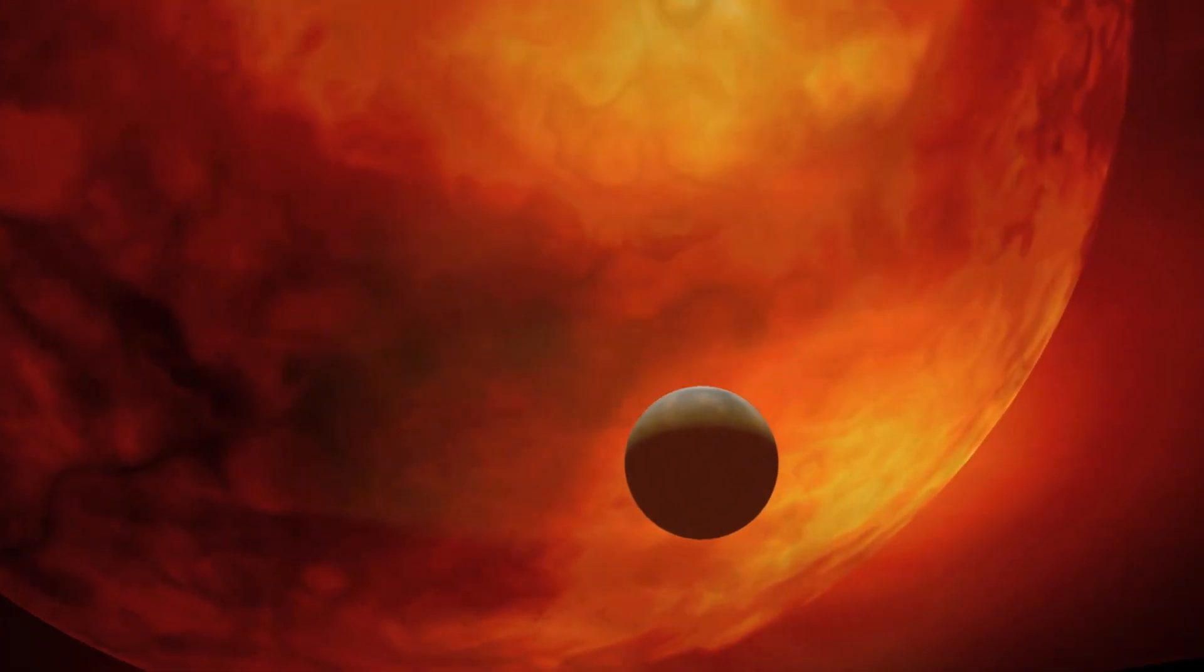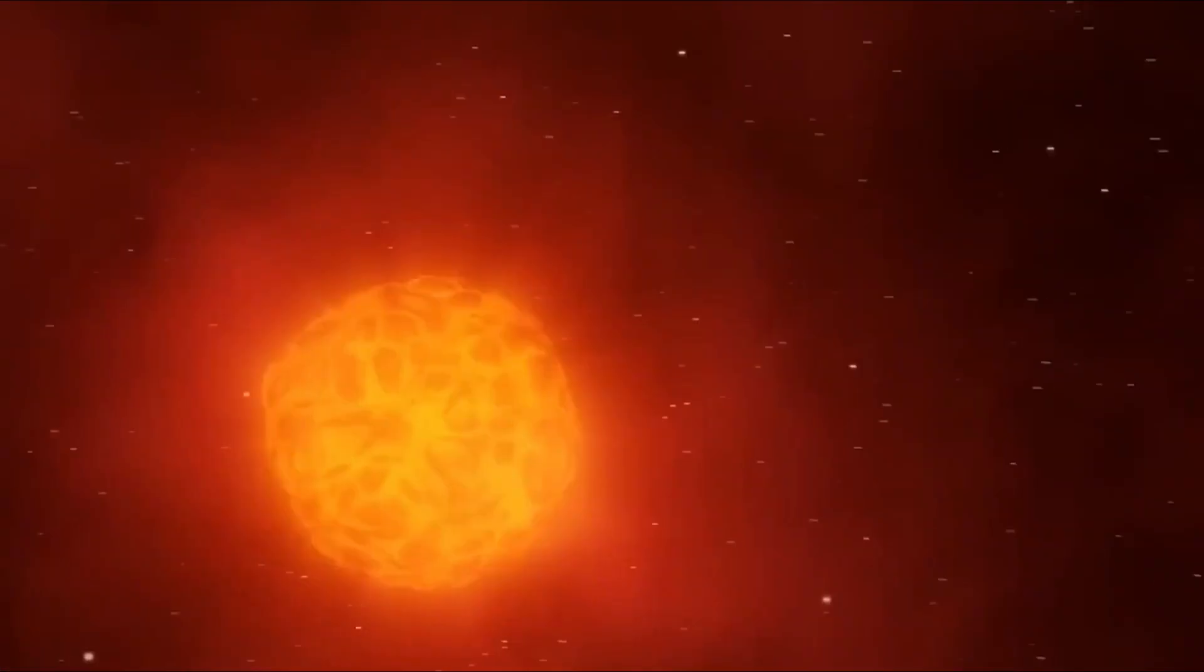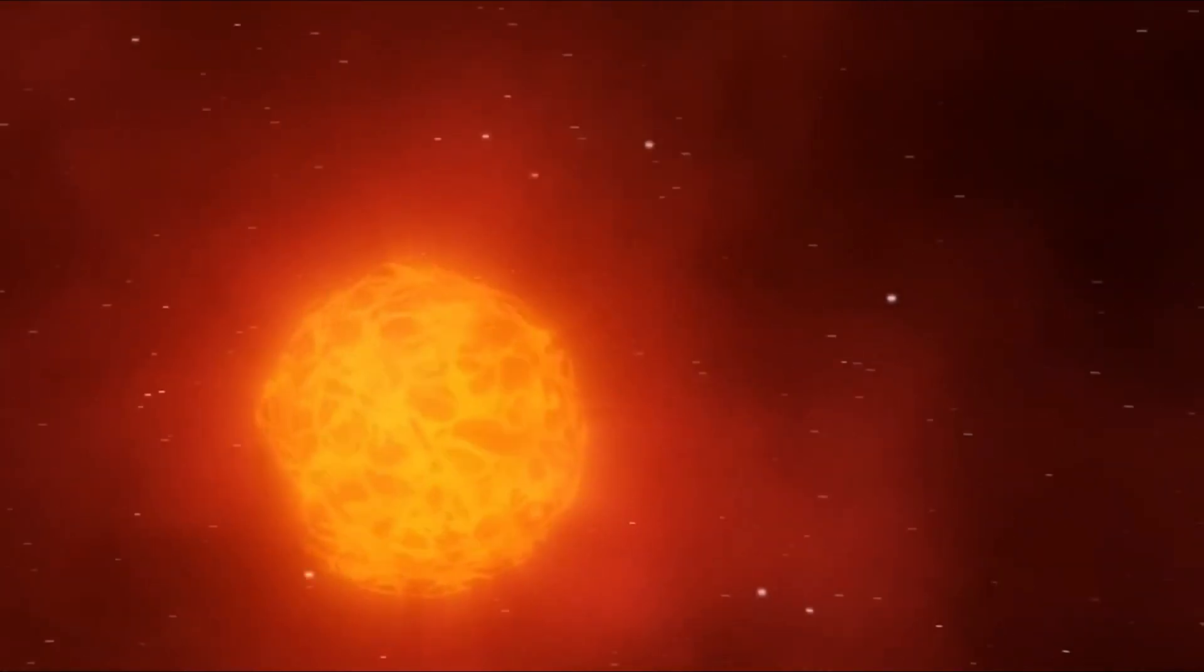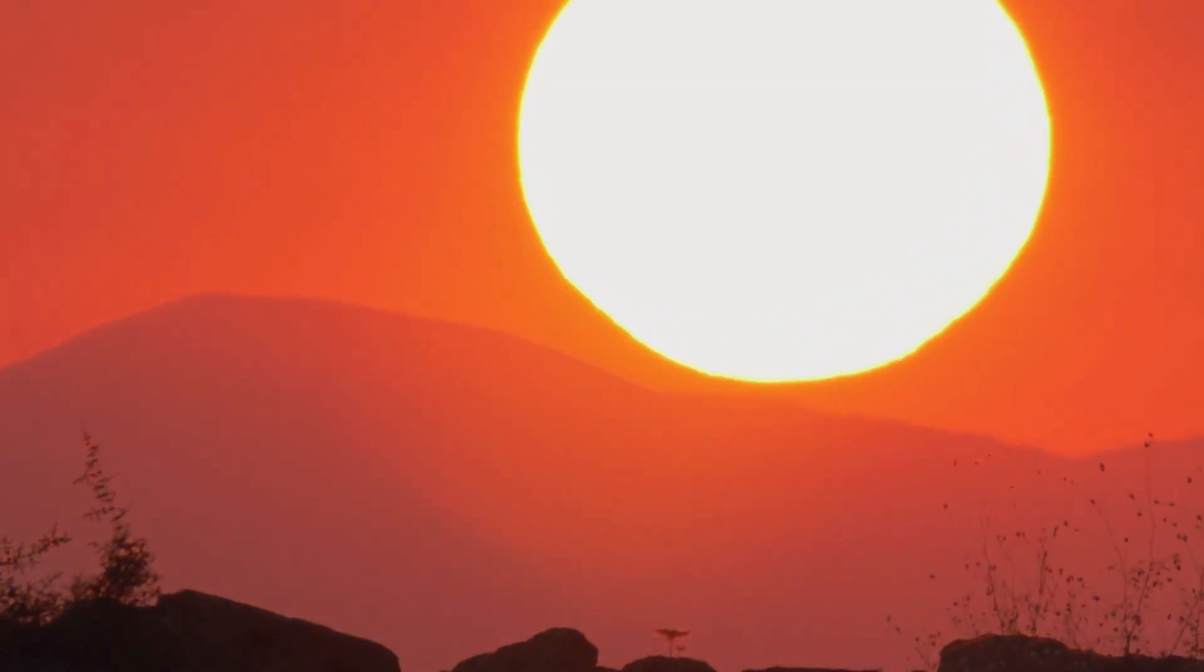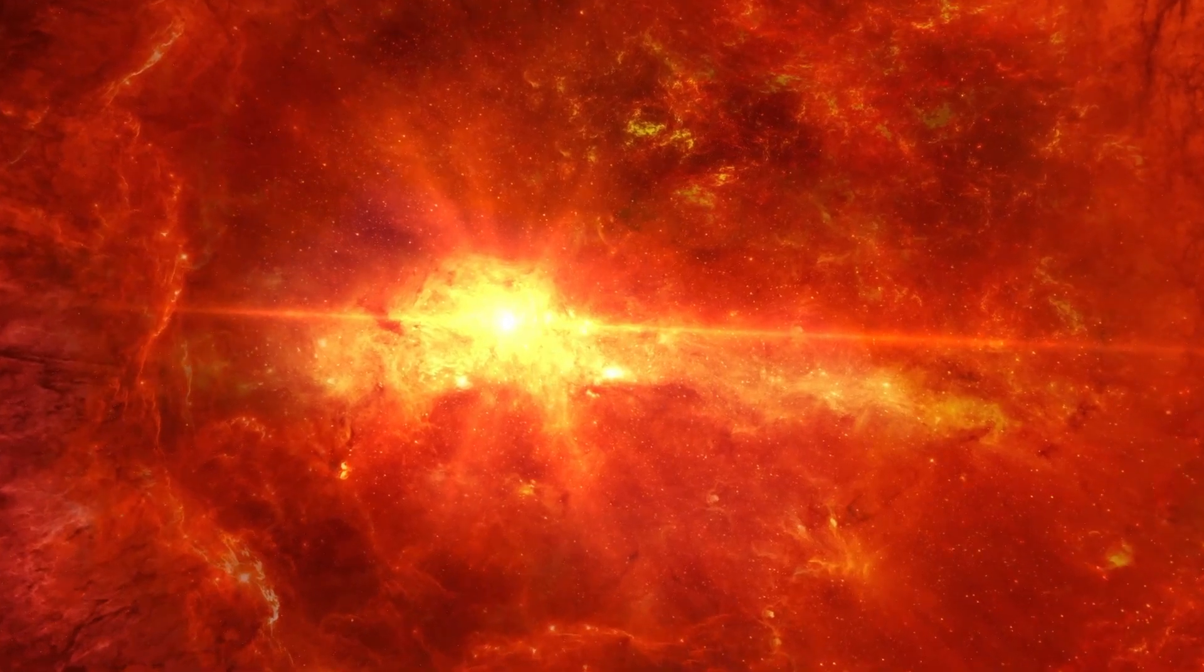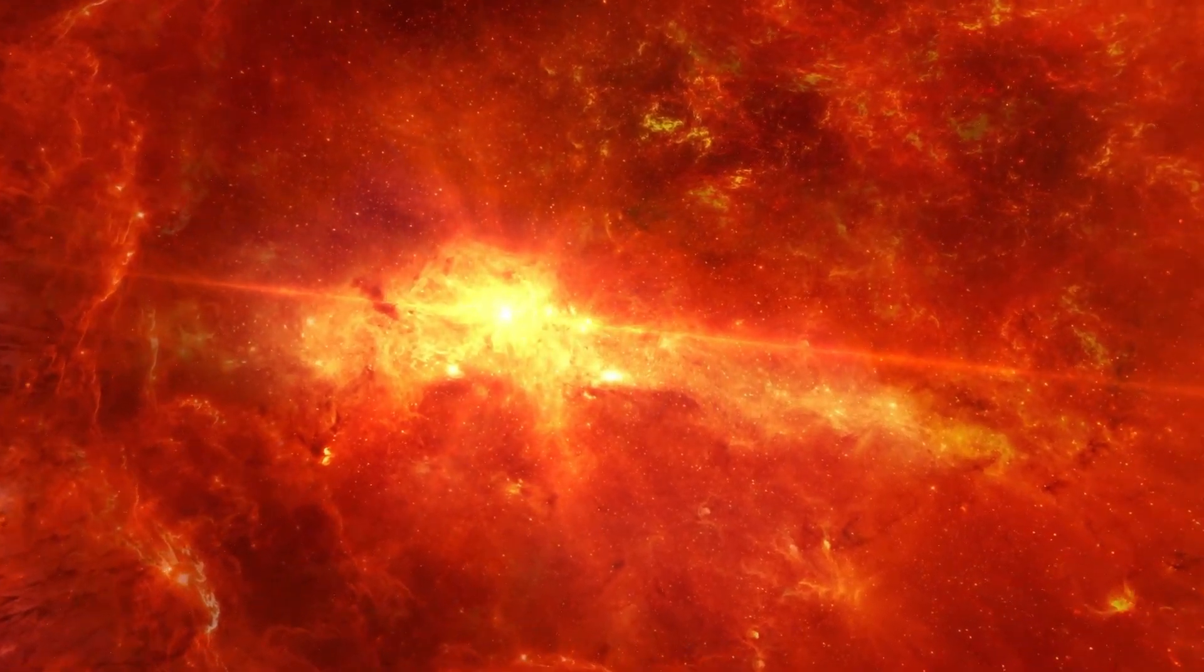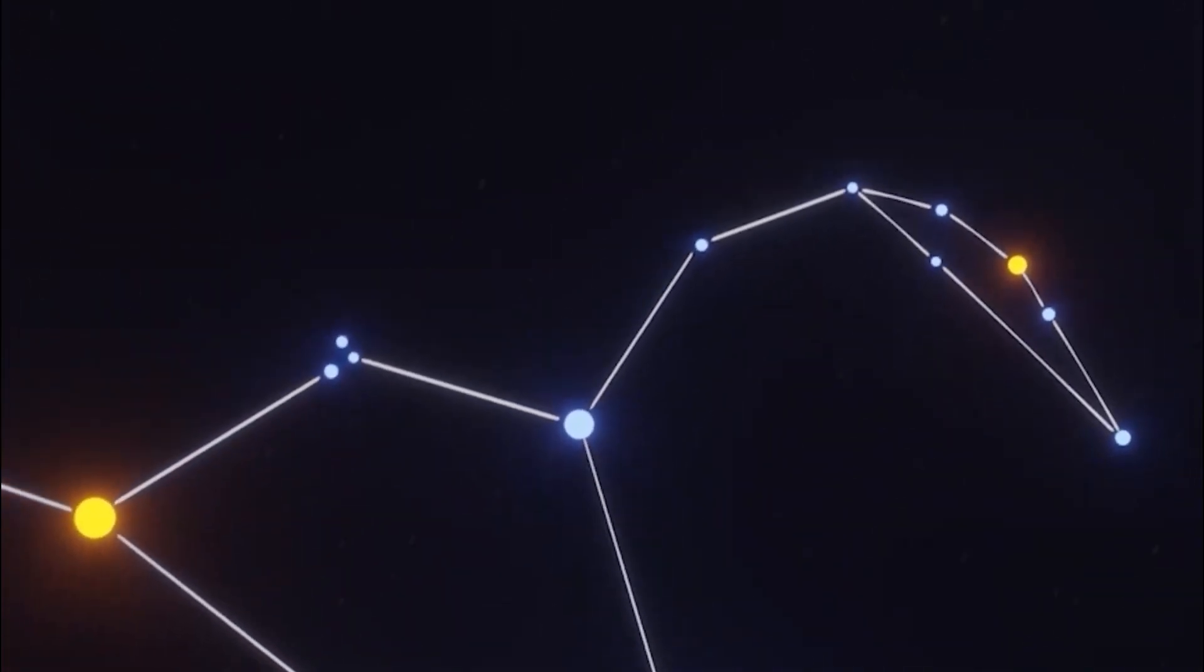Betelgeuse has been on quite the cosmic journey. Like all stars, it started as a young, hot ball of hydrogen, burning bright in its main sequence phase. But as it aged, it transformed into a massive red supergiant, swelling in size and becoming one of the most brilliant objects in our night sky.